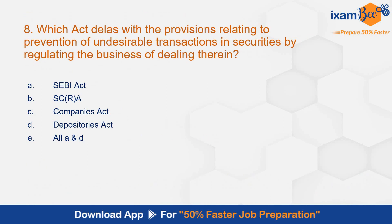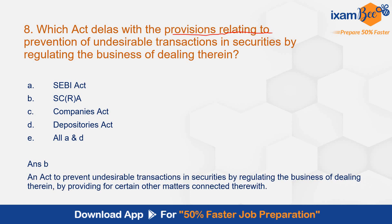Question number 8: Which act deals with the provisions relating to prevention of undesirable transactions in securities by regulating the business of dealing therein? The correct answer is B, SCRA. SCRA has the provisions relating to prevention of undesirable transactions in securities. This is as per the preamble of SCRA — an act to prevent undesirable transactions in securities.